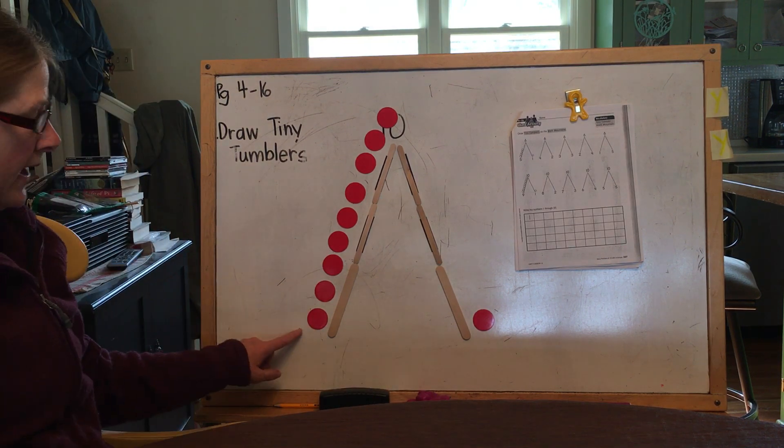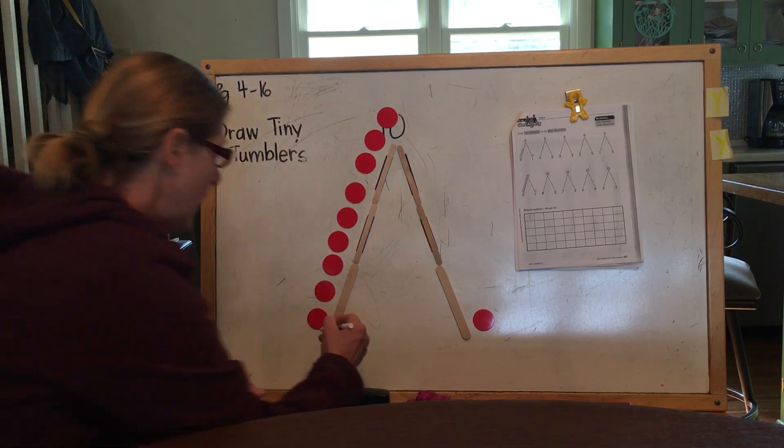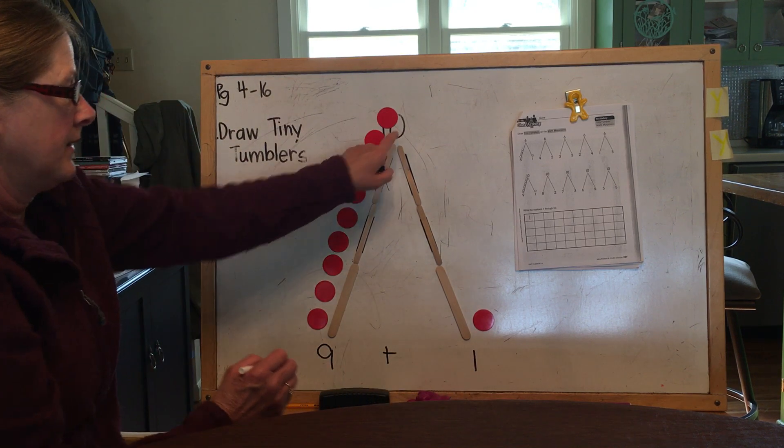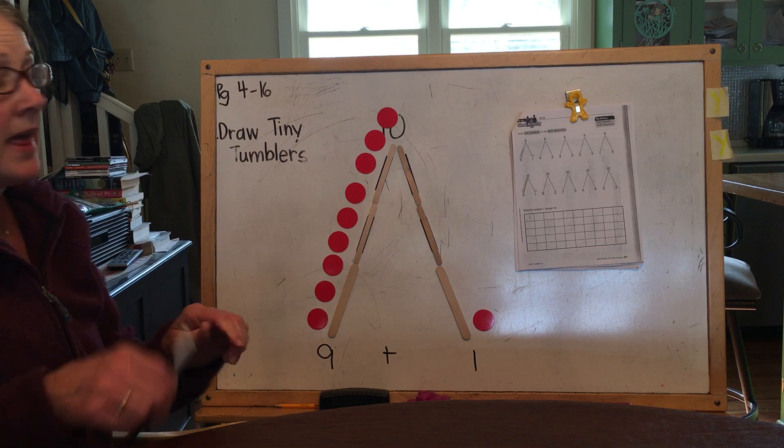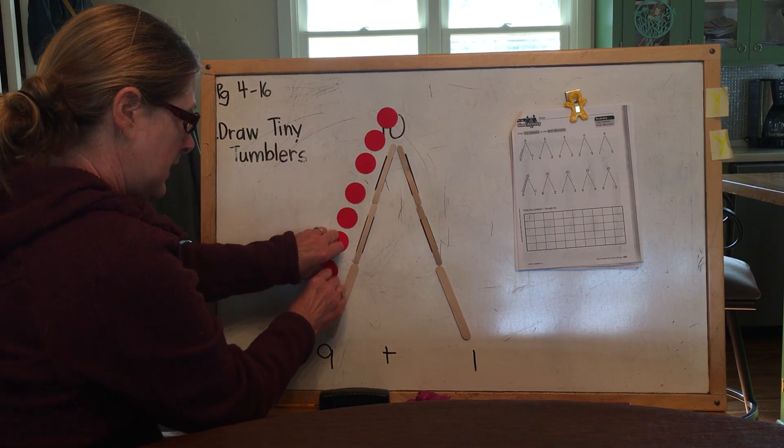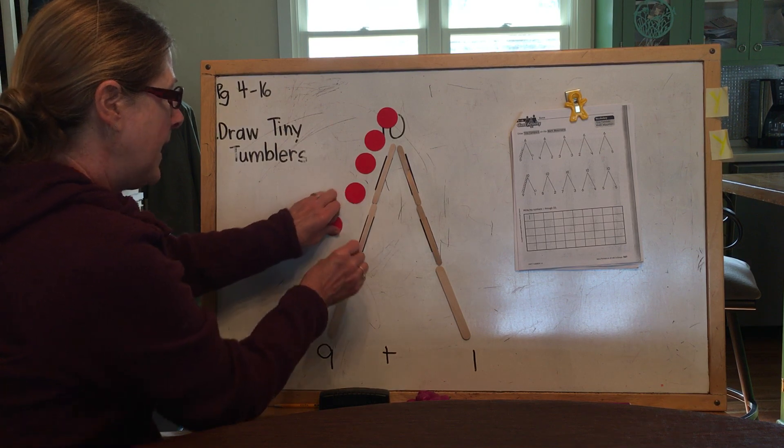Okay, so we have nine plus one equals 10. Okay, I'm going to get rid of all my tiny tumblers, all 10 of them.